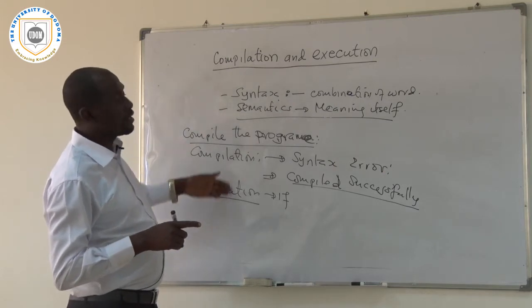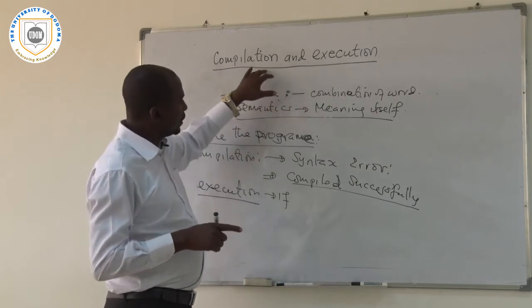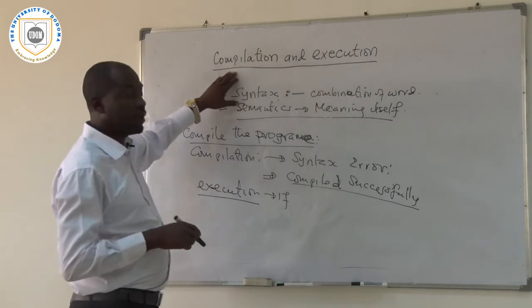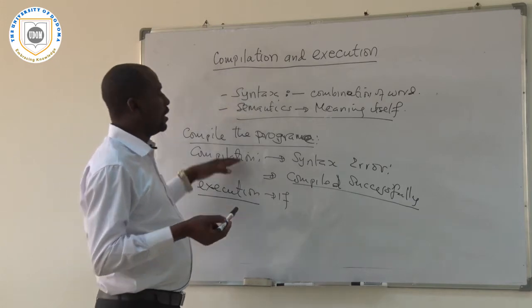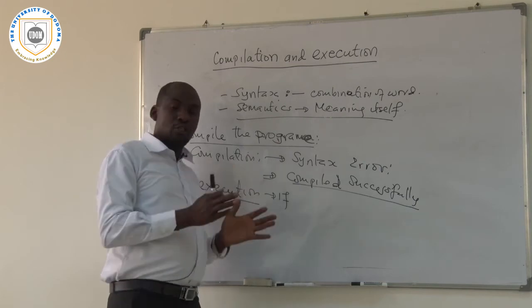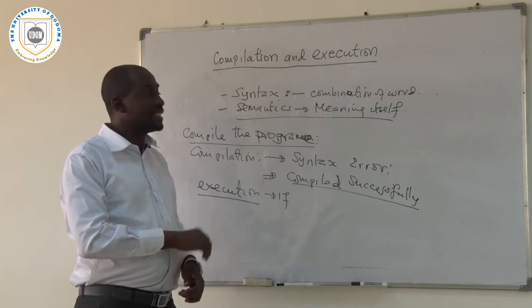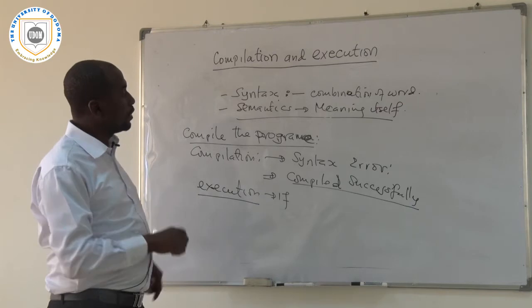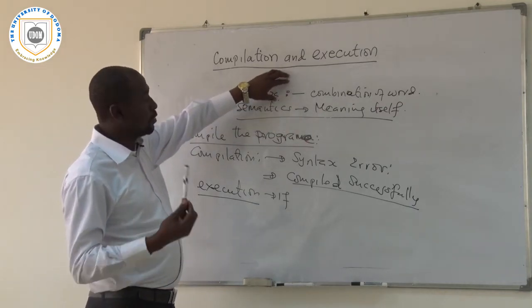That is why when you are writing a program, it is very important to do both compilation and execution. Always you are supposed to start by compilation to check whether there is a syntax error. Because if there is a syntax error, there is no way you can go to check for the semantics. So the first step is to check whether the program is syntactically right by compiling it.